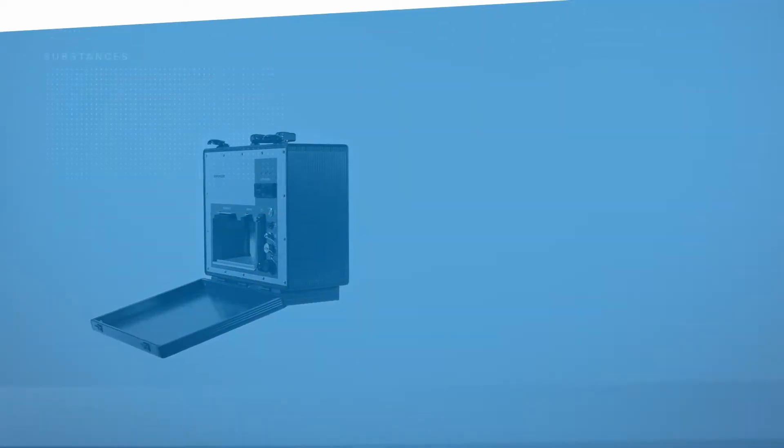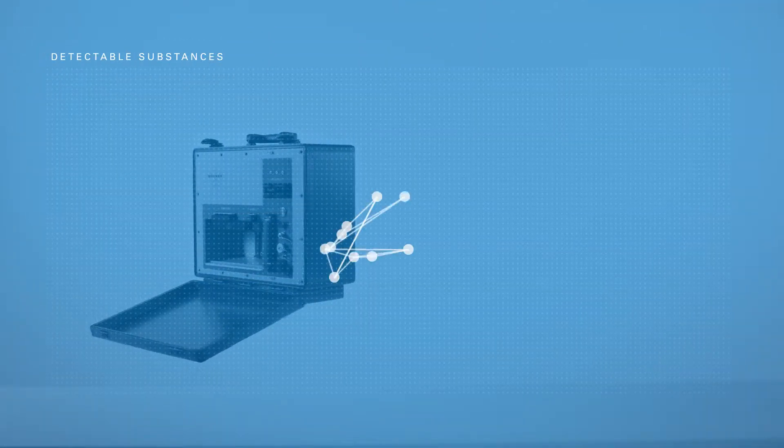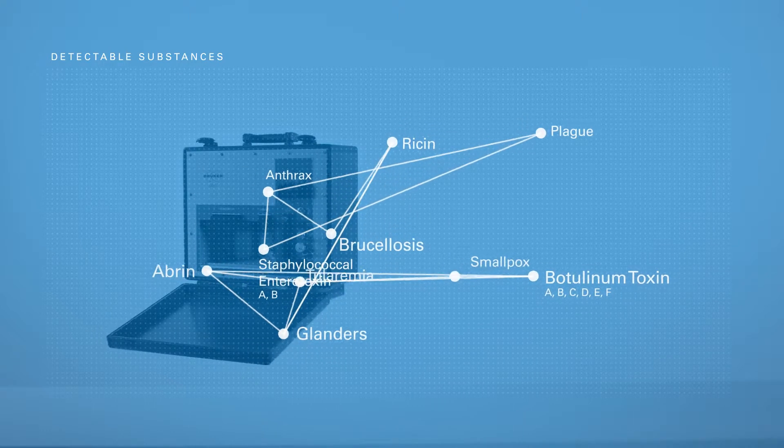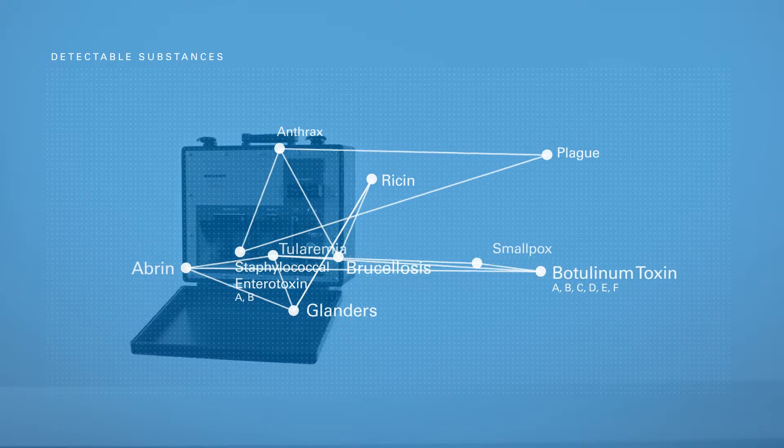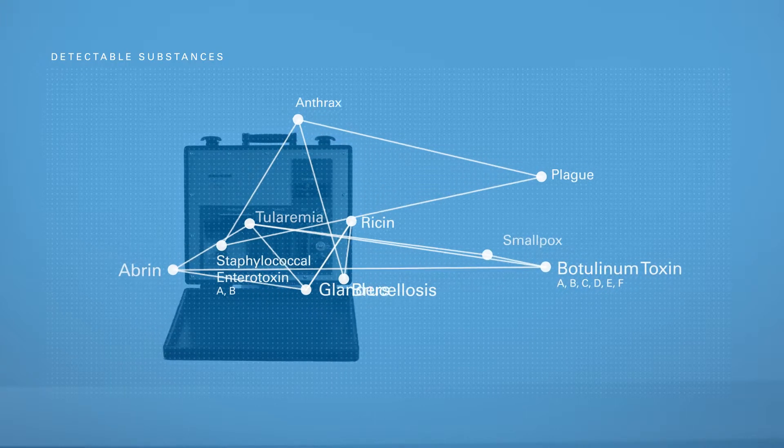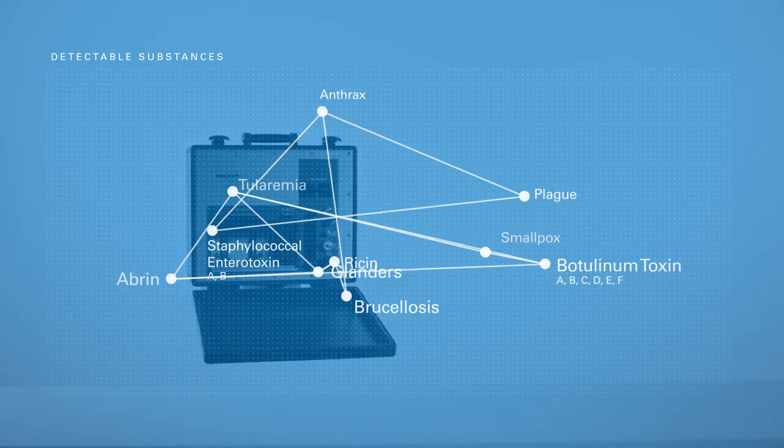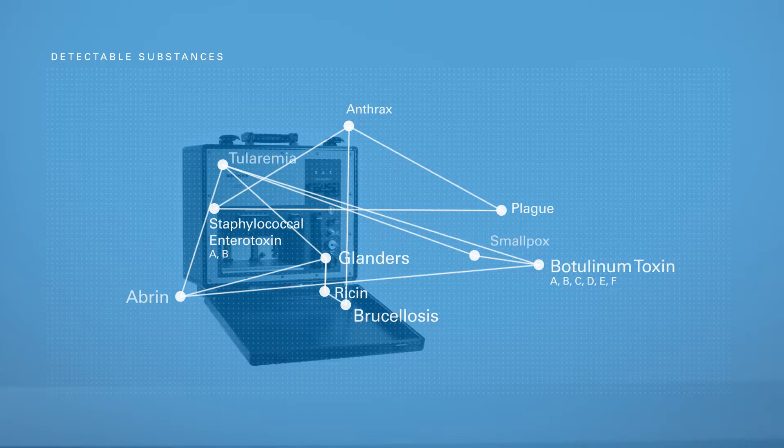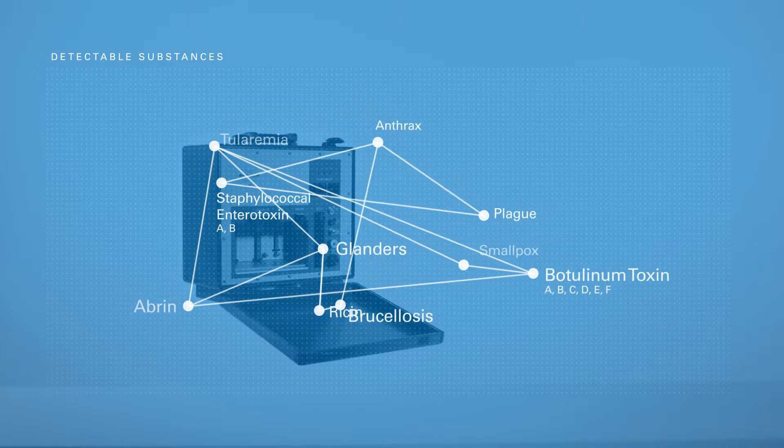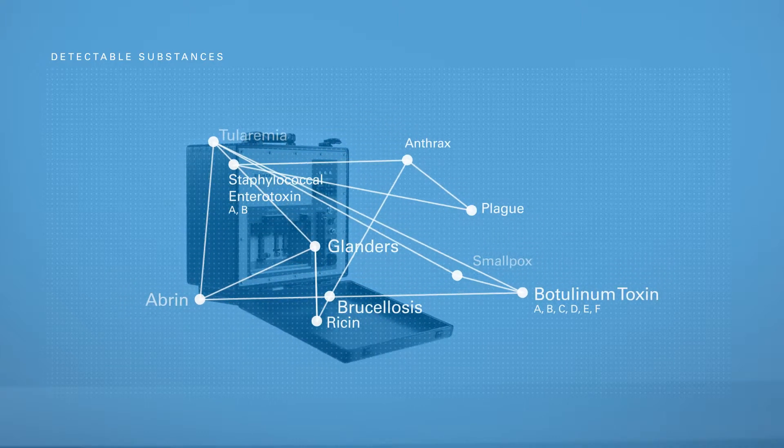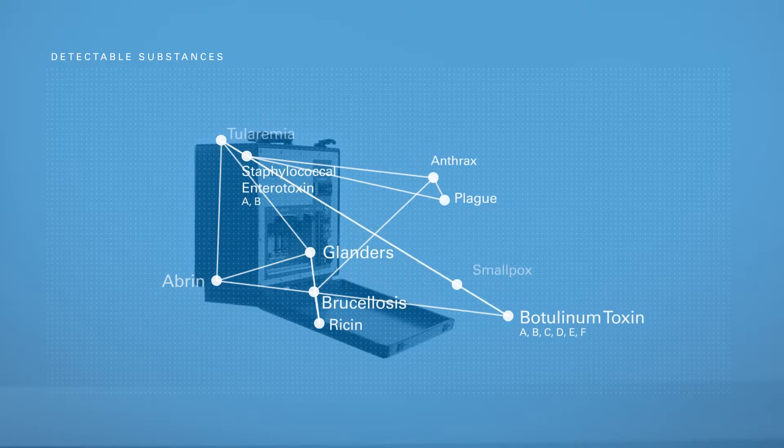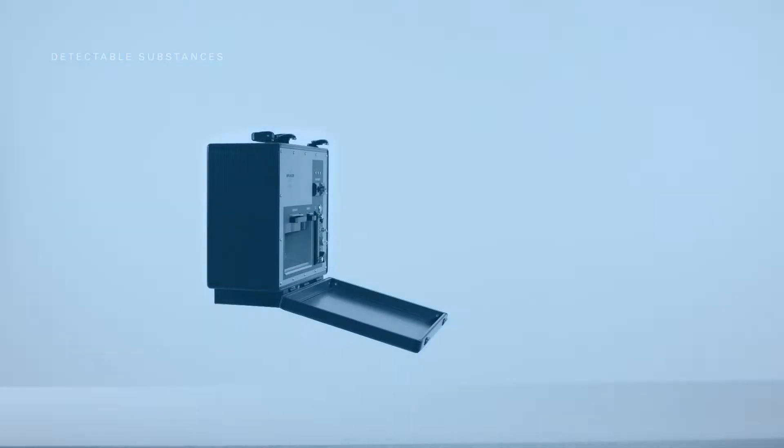The PBDI can detect the following agents: Bacillus anthracis, Yersinia pestis, Francisella tularensis, Brucella melitensis, Burkholderia mallei, Orthopoxviruses, Botulinum toxins A, B, C, D, E, and F, Staphylococcal Enterotoxins A and B, Ricin, and Abrin.